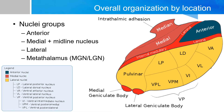In the lateral nuclear group, there is a dorsal tier comprised of lateral dorsal, lateral posterior, and pulvinar, as well as a ventral tier containing the ventral anterior, ventral lateral, and ventral posterior. There is also a metathalamus with the MGN and LGN.